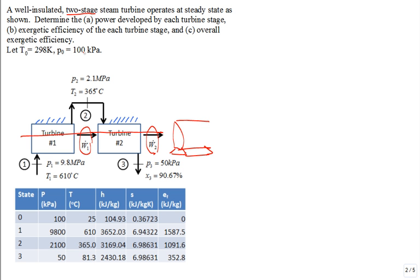It's operating at steady state. There's no information about kinetic energy or potential energy. Keep the problem statement short, you assume it's negligible. And they ask you to determine the power developed by each turbine stage.